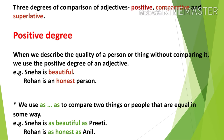One important point to remember: we use 'as...as' to compare two things or people that are equal in some way. For example, 'Sneha is as beautiful as Priya' — both are equally beautiful, so we use 'as beautiful as.' Similarly, 'Rohan is as honest as Anil' — both are equally honest, so we use 'as honest as.'